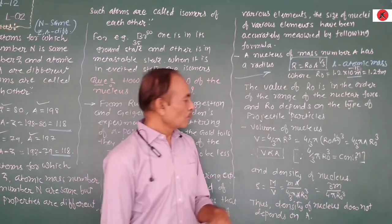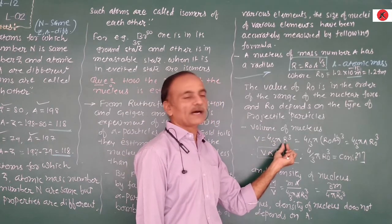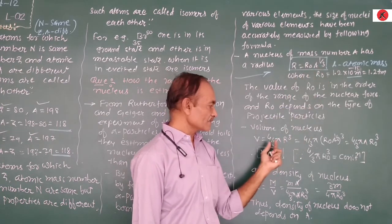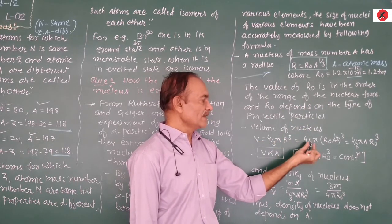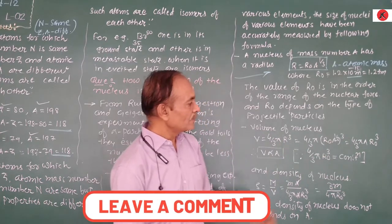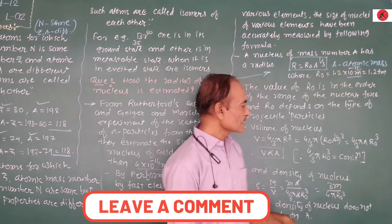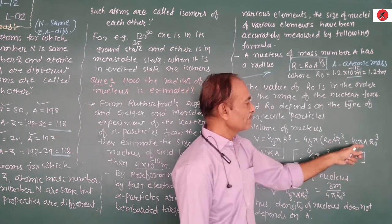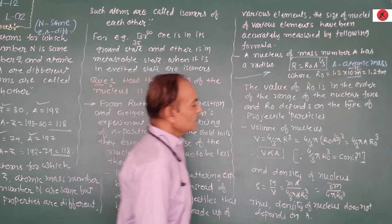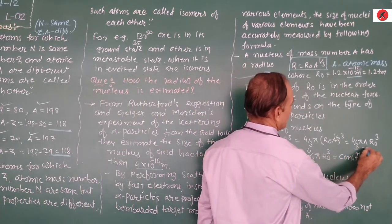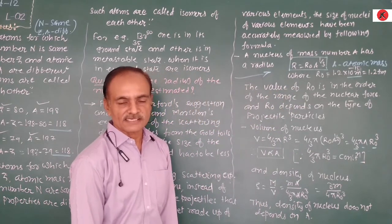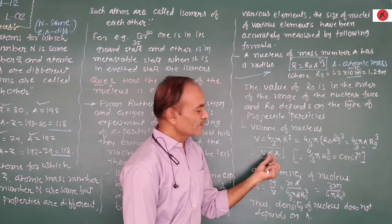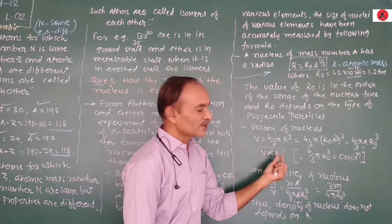Now, the volume of the nucleus: V = (4/3)πR³. Substituting R = R₀ · A^(1/3), the volume of the nucleus equals (4/3)π · (R₀ · A^(1/3))³ = (4/3)π · R₀³ · A. Since (4/3)π and R₀³ are constants, the volume of the nucleus is directly proportional to the atomic mass number A.